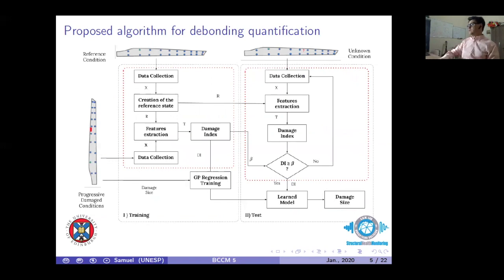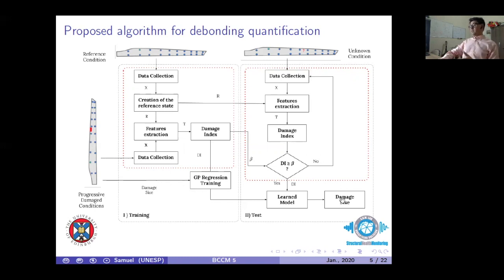A general picture of this algorithm is organized in two steps. First, we have a reference condition where we perform data acquisition and extract damage-sensitive features. Assuming access to artificial damage in a similar blade via an experimental or numerical setup, we perform Gaussian process regression using supervised learning. For testing, we apply an unknown condition and correlate the features with the learned model to estimate the damage size.